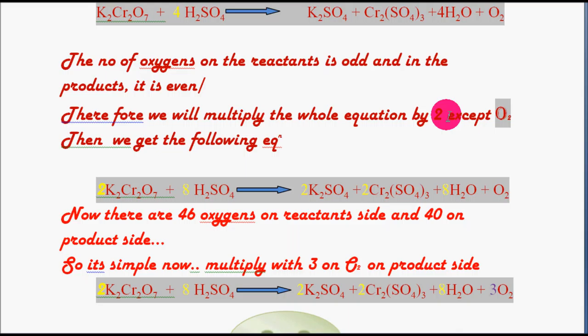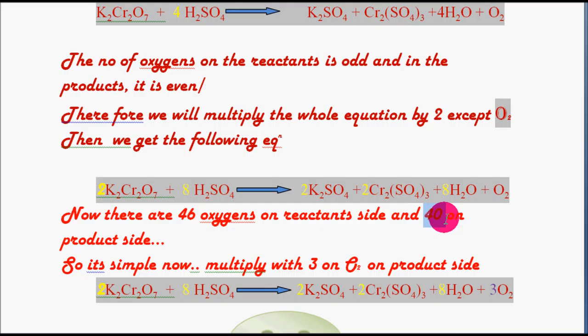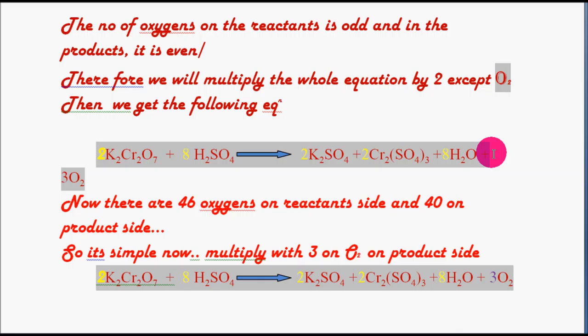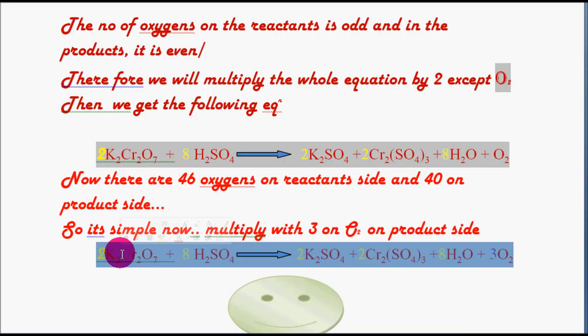When we multiply by 4 for sulfur, the hydrogen count on the left hand side becomes 8, while the right hand side still has only 2. To fix this, multiply the water on the right hand side by 4 to make hydrogens equal at 8. Now checking oxygens: the oxygens on the reactant side are odd in number while on the product side they are even. In such a situation, multiply the whole equation by 2 except the elementary oxygen molecule. After multiplying, the left hand side has 46 oxygens. Then multiply the elementary oxygen by 3, adding 6 more oxygens to make the right hand side also equal to 46. The equation is now fully balanced using the frequency number method.